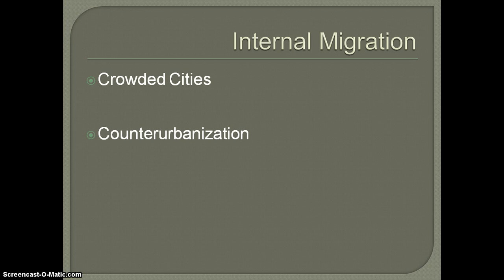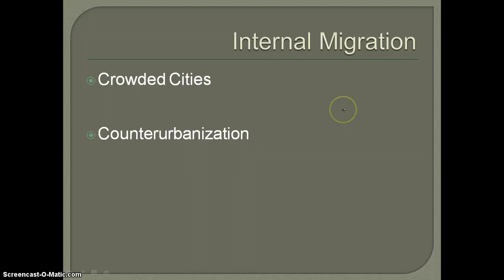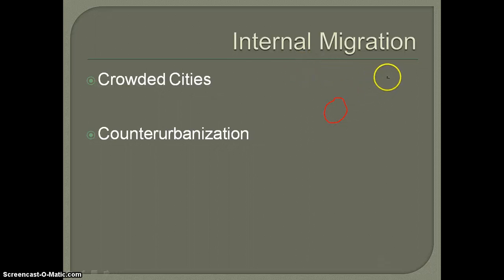What begins to happen is you have the initial move of people from rural areas to urban areas, mainly looking for jobs. I like to draw a little diagram to illustrate this point. You have the urban center where the factories are, and then you have the surrounding rural areas. Initially you have poor farmers — people looking for jobs — moving with their families into the urban area.